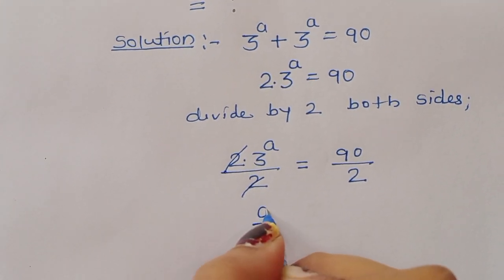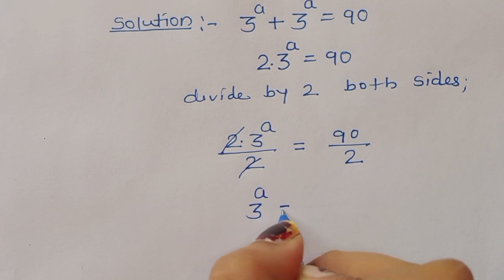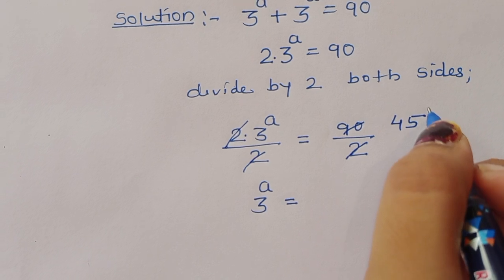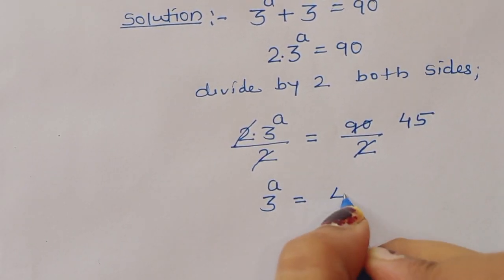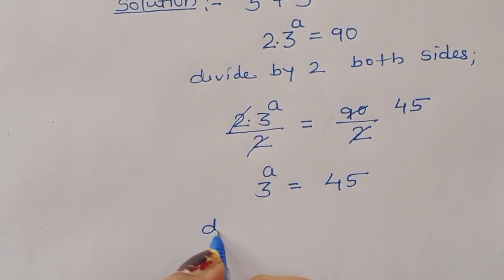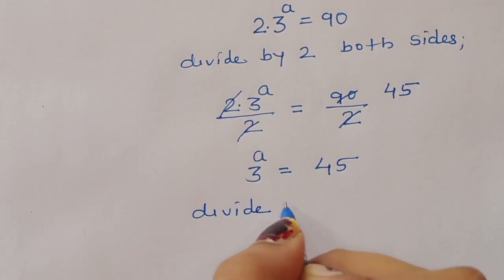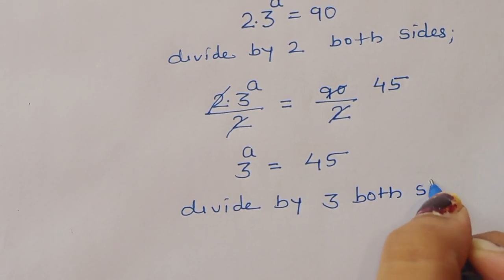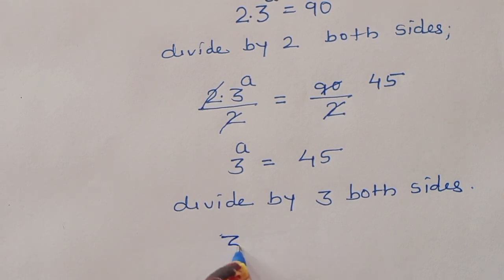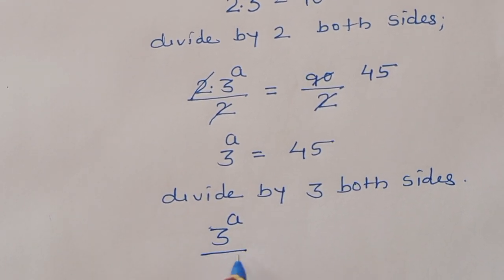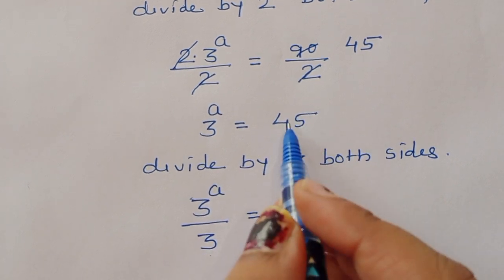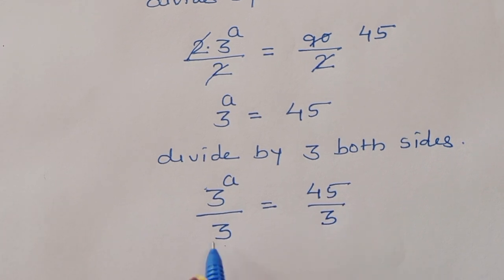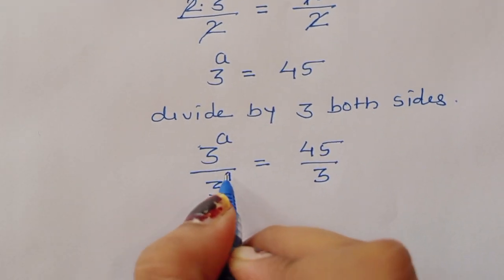2 times 3 power a divided by 2 is equal to 90 divided by 2. The 2 cancels, giving us 3 power a is equal to 45. Now we divide by 3 on both sides. 3 power a divided by 3 is equal to 45 divided by 3. This is 3 power 1, so we can write 3 power 1.